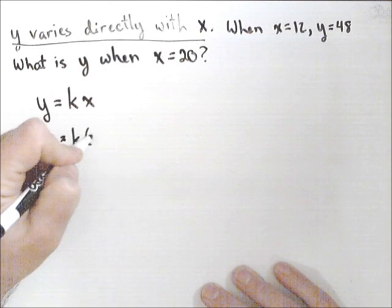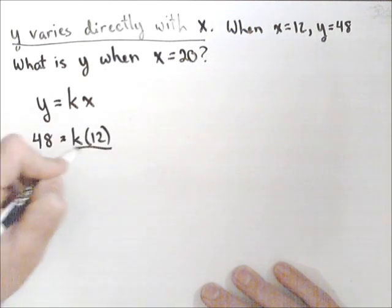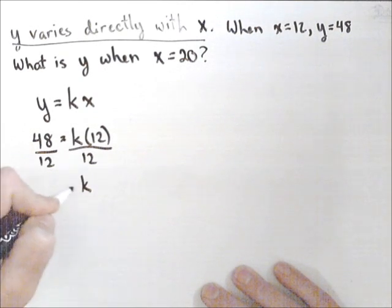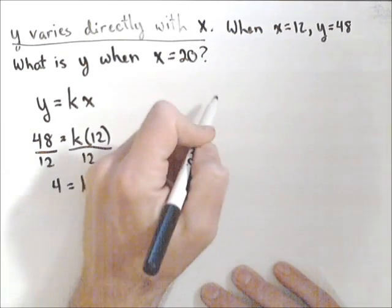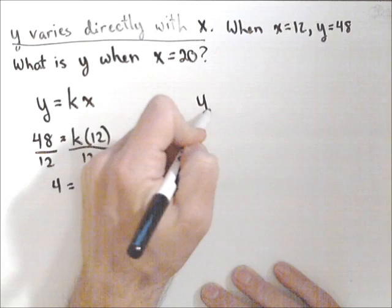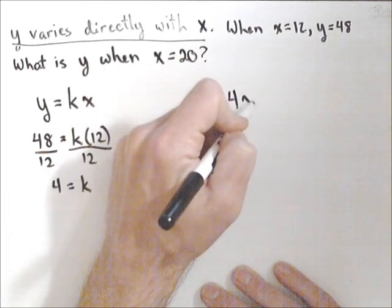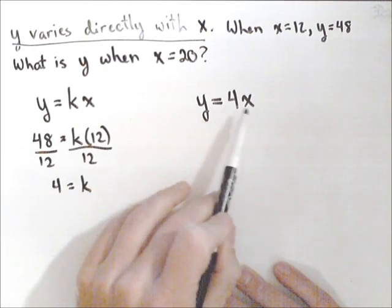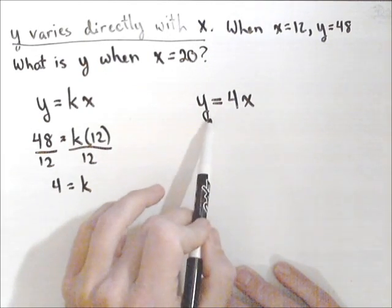48 equals k times 12. Divide both sides by 12, and we get that k equals four. So the relationship we have between our two variables is y equals four x. So now we can solve for y for any given x value, or for x for any given y value.